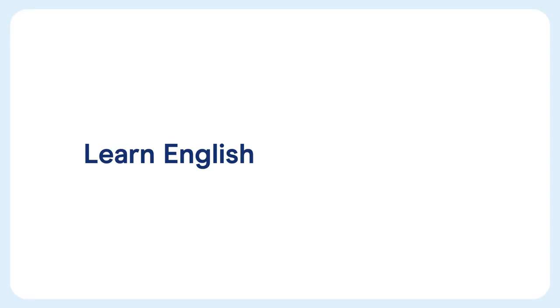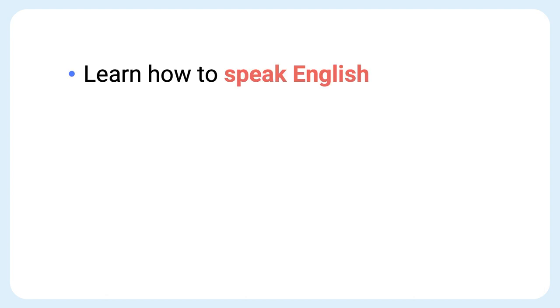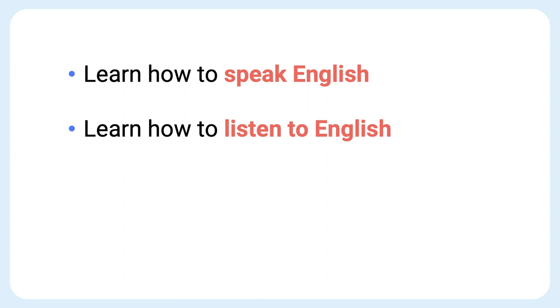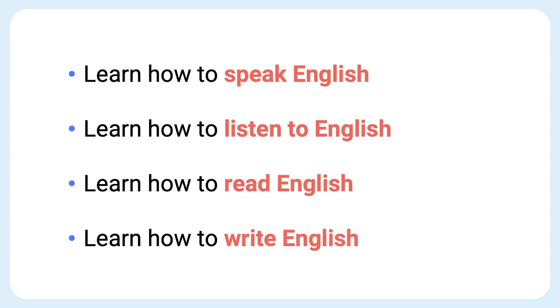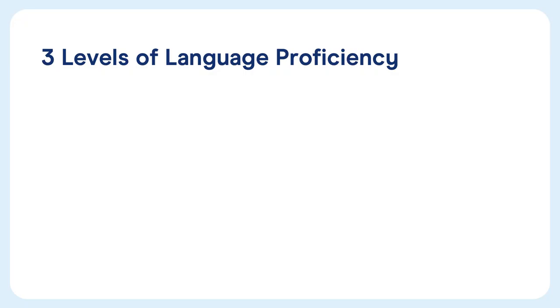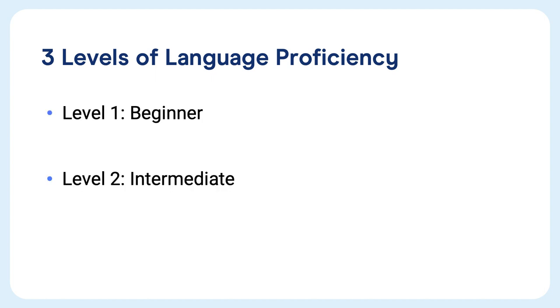First things first, when I say learn English, I really mean learn four things: learn how to speak English, learn how to listen to English, learn how to read English, and learn how to write English. And of course, you don't just learn it like this. Learning how to speak, listen, read and write is not a yes or no thing — it's a spectrum, or you can think about them as levels. There are three broad levels of English language proficiency: level one, beginner; level two, intermediate; level three, advanced.